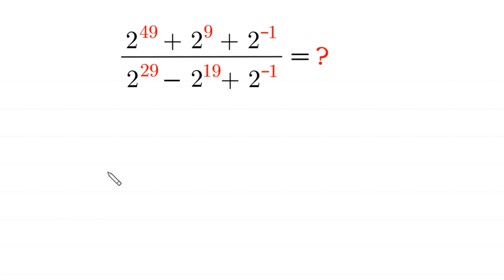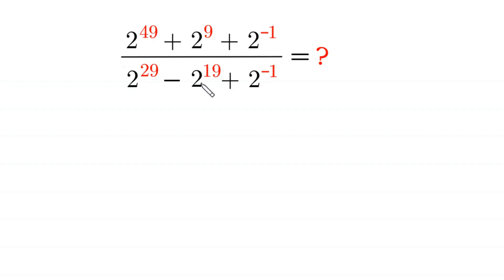Hello everyone, you are welcome to how to evaluate this very nice expression: 2 to the power 49 plus 2 to the power 9 plus 2 to the power negative 1, divided by 2 to the power 29 minus 2 to the power 19 plus 2 to the power negative 1.